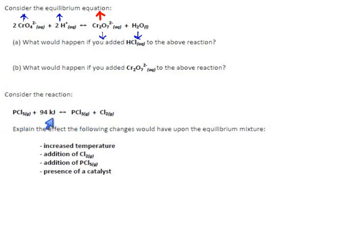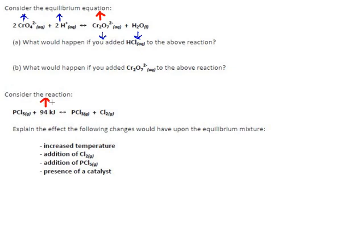We've seen this reaction before, but now they've put in heat — this is a thermochemical equation and it's endothermic. This is not too hard to handle because you can treat heat just like a chemical. The reaction will use up PCl5 and energy (heat) in the process of making PCl3 and chlorine. If we do increased temperature — putting this reaction in an oven or on a hot plate — we're adding heat. We've put in excess heat, and now the system is going to use up that heat, consuming PCl5 and producing things on the right side.